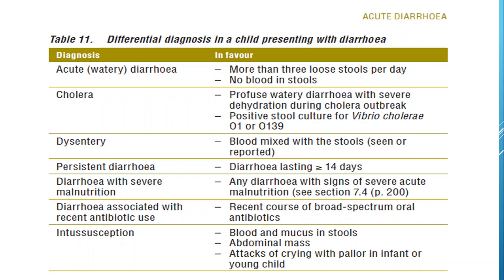Diagnosis of dysentery is blood mixed with the stool. Persistent diarrhea is diarrhea lasting 14 days or more. Diarrhea with severe malnutrition is characterized by any diarrhea with signs of severe acute malnutrition. Diarrhea associated with recent antibiotic use follows a course of broad-spectrum oral antibiotics. Necrotizing enterocolitis has characteristics of blood and mucus in stool, abdominal mass, and attacks of distress with pallor in infants or young children.